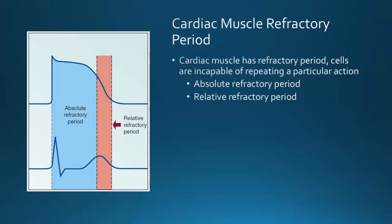Refractory periods: the cardiac muscle has a refractory period in which cells are incapable of repeating a particular action. When cardiac cells cannot respond to any stimulation regardless of how long a stimulus is applied, this is the absolute refractory period. The relative refractory period is during the time when the cardiac muscle cell may respond to a stimulus but has not reached its full resting potential yet. The absolute refractory period occurs from the start of the Q wave to the apex of the T wave.